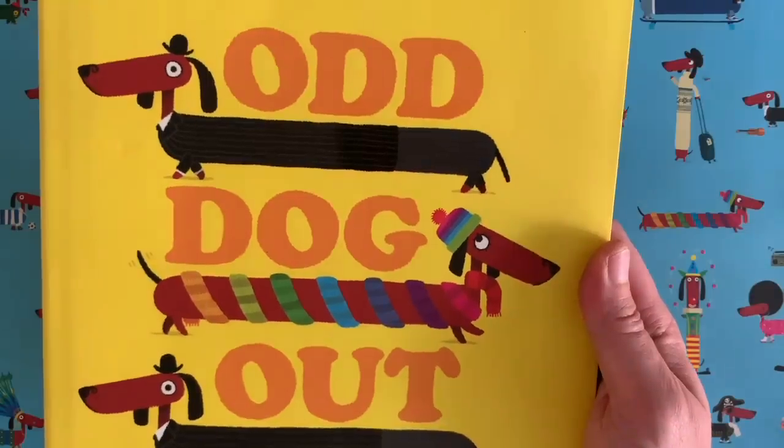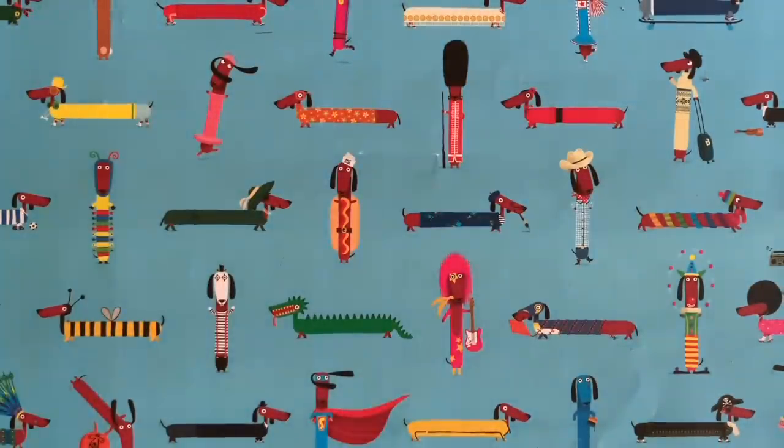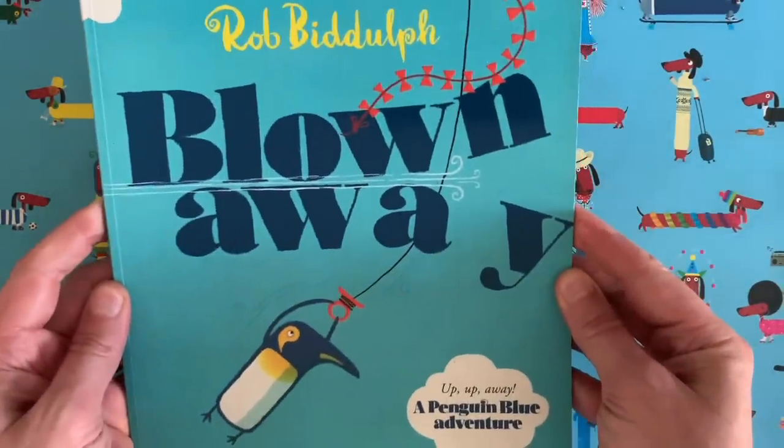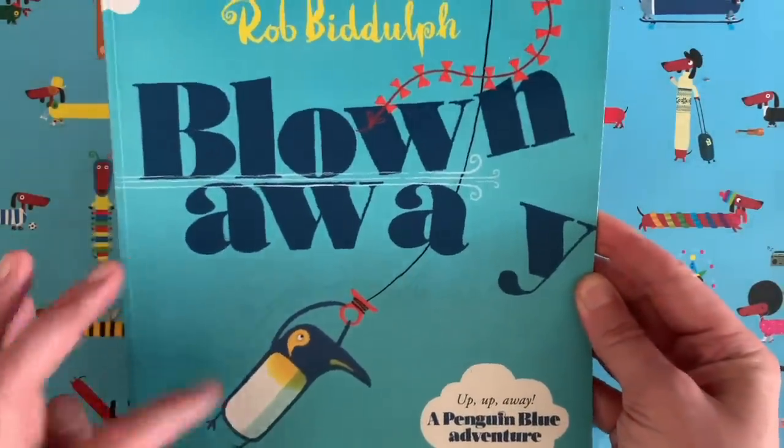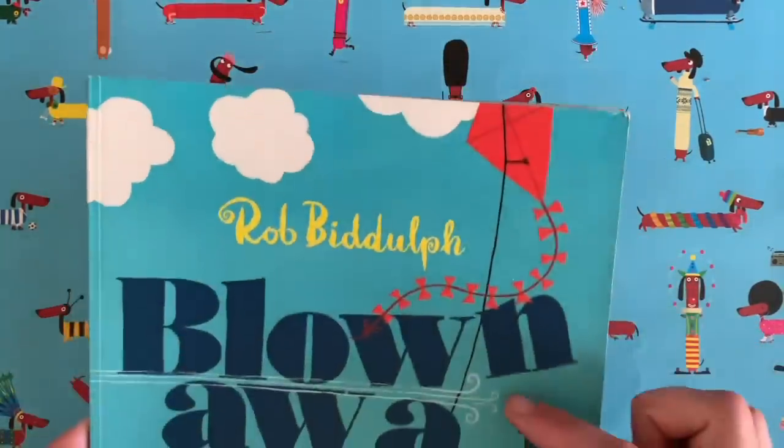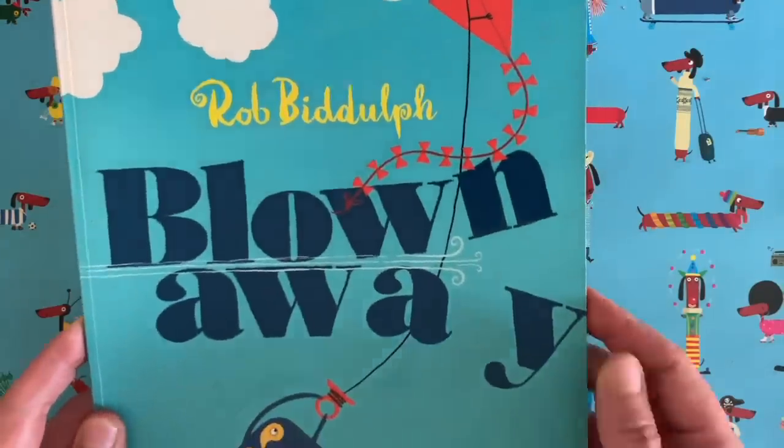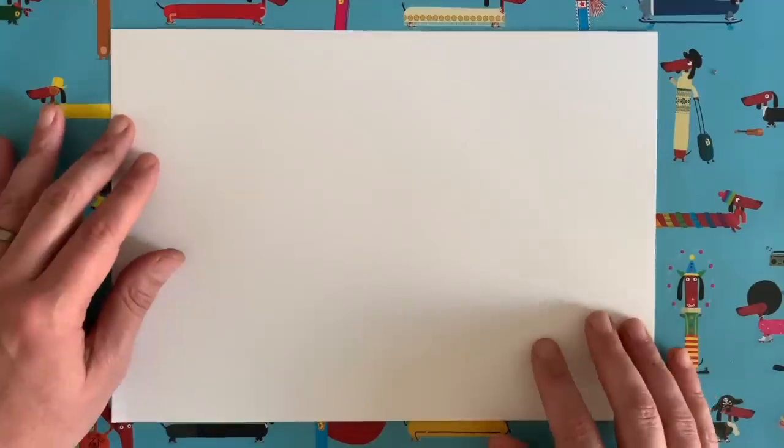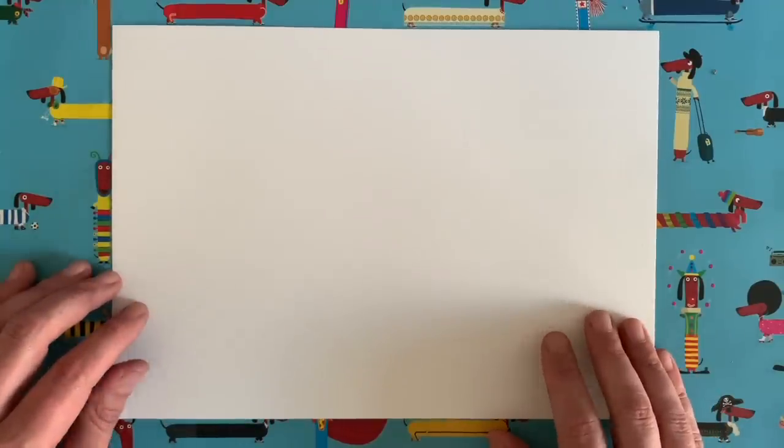It's called Odd Dog Out. All about the sausage dog who doesn't fit in with the other sausage dogs or maybe this one, my very first book, is called Blown Away, about Penguin Blue here. This kind and a very windy day. And I am here today, as per usual, to do a little bit of drawing with you.